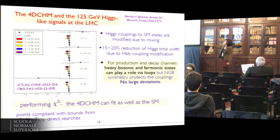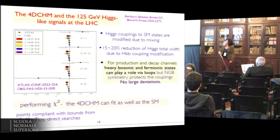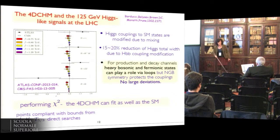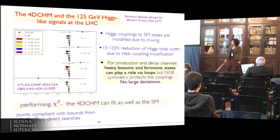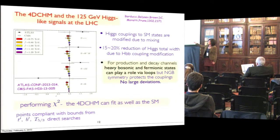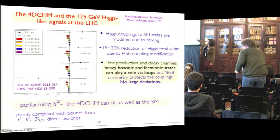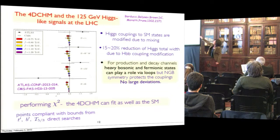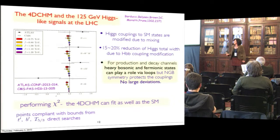Regarding the Higgs signal at the LHC: the Higgs couplings to standard model states are modified in these schemes. For example, the Higgs total width gets a 15–20% reduction with respect to the standard model. For production and decay channels, heavy bosonic and fermionic states can play a role via loops, but the Nambu-Goldstone boson symmetry protects the couplings, so we do not have large deviations. We performed a chi-square analysis comparing different benchmark points with experimental measurements of four Higgs decay channels, and found that the 4D composite Higgs model can fit the data as well as the standard model.